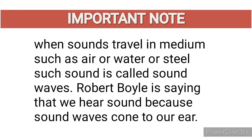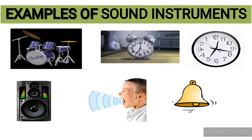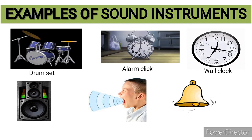We concluded that what robot boy is actually saying is that we hear sound because sound waves come to our ear. We also looked at examples of sound instruments: we talked about the drum set, your alarm clock, your wall clock, and your speaker.